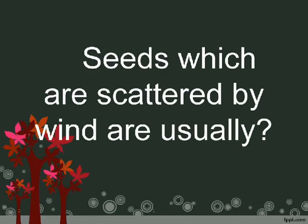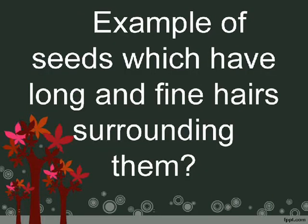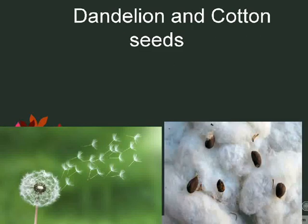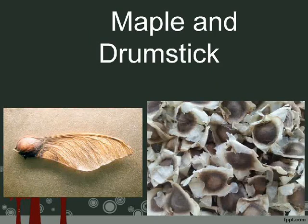Seeds which are scattered by wind are usually small and light. Examples of seeds which have long, fine hair surrounding them are dandelion and cotton seeds. Examples of seeds which have wings attached to them are maple and drumstick.